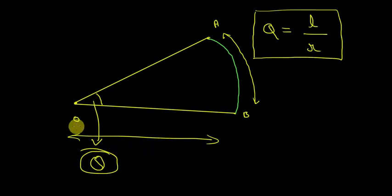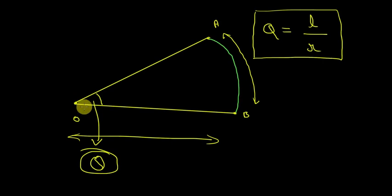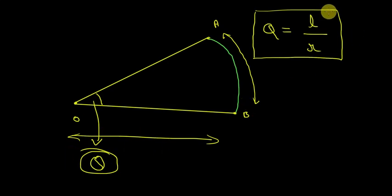What exactly is theta telling us? Theta is telling us the rotation of line OA with respect to OB. Think of it this way: there was a line OB at a point, and a line OA right above it. As we start drawing a curve, line OA was glued to one end of the curve and started rotating with respect to OB. We need something to tell us how much this line is rotating — and we call that theta. This is the formula of theta.